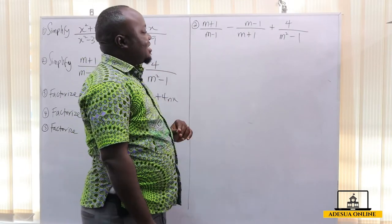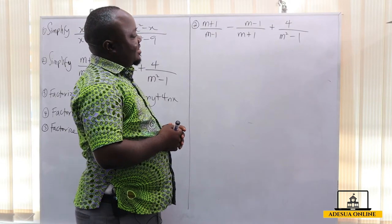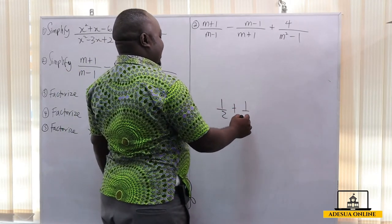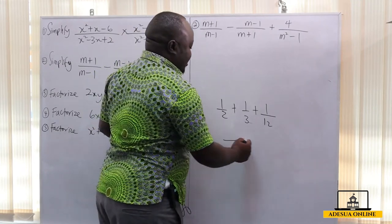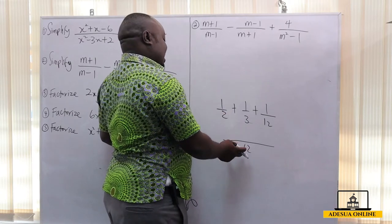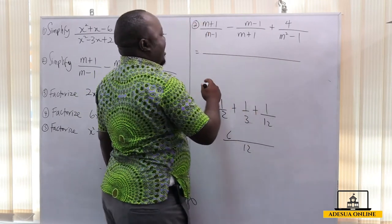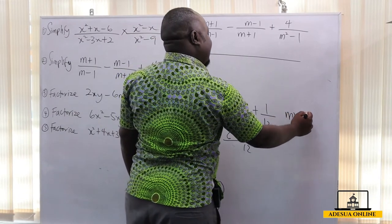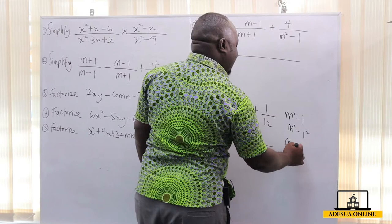Now we solve question 2: (m+1)/(m-1) - (m-1)/(m+1) + 4/(m² - 1). Just like finding LCM for ordinary fractions like 1/2 + 1/3 + 1/12 where the LCM is 12, we do the same here. The denominators are (m-1), (m+1), and (m² - 1). Now m² - 1 is the same as m² - 1², which is the difference of two squares: (m-1)(m+1). So our LCM becomes (m-1)(m+1), which equals m² - 1.